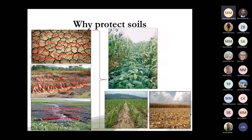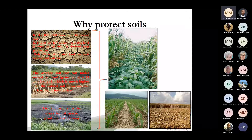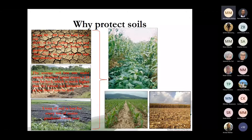Why do we protect the soil? It takes many years — about 400 to 500 years — for a centimetre of soil to form. About 12 to 14% of 16.7 million hectares of land is rated as suitable for dry land production in South Africa. However, out of that 12 to 14%, only about 3% has high agricultural potential.